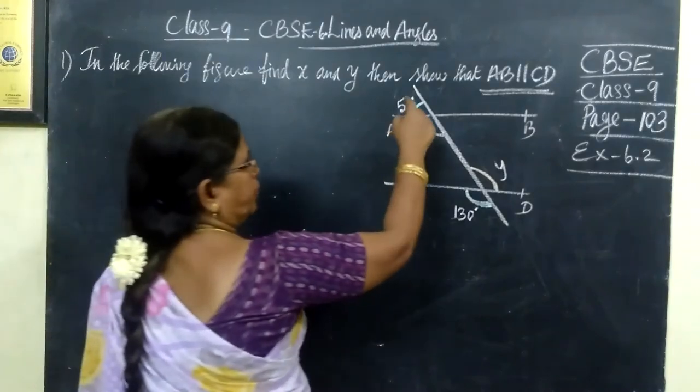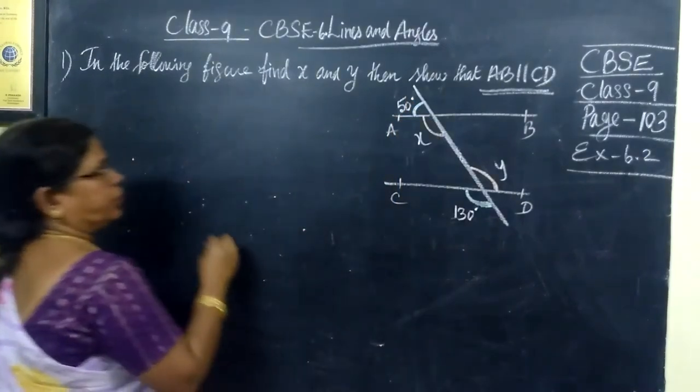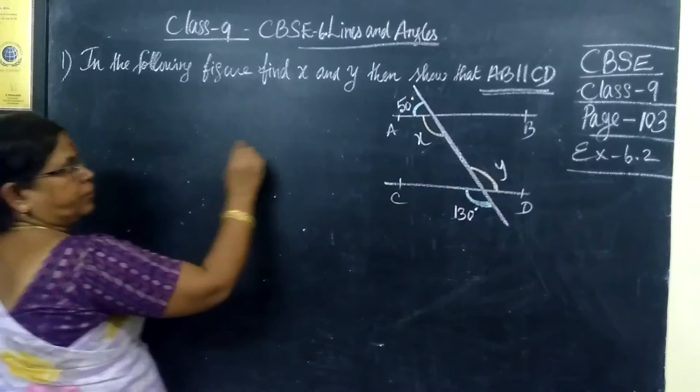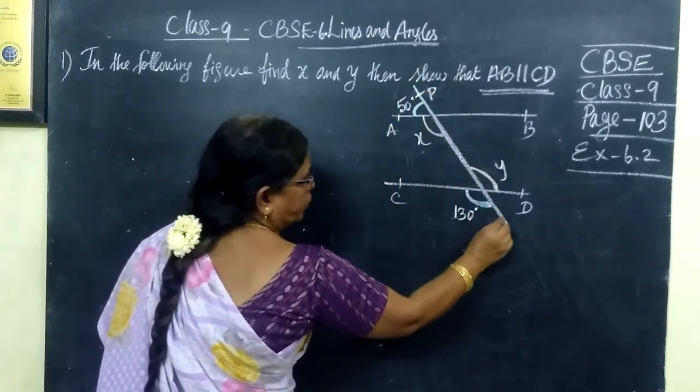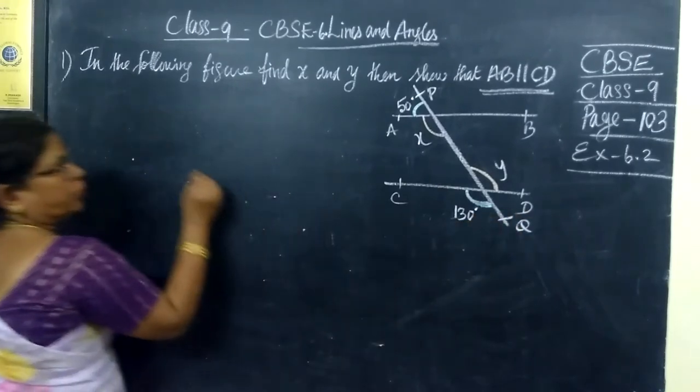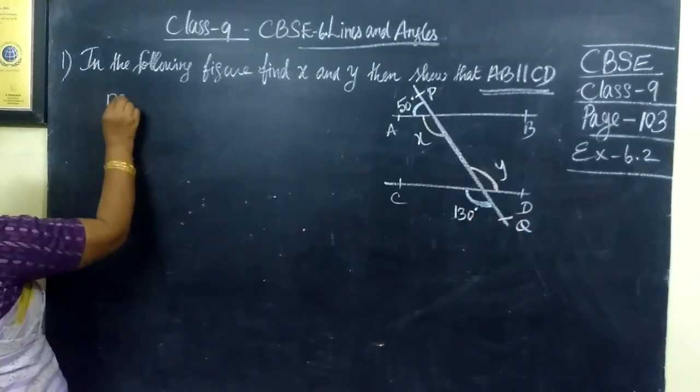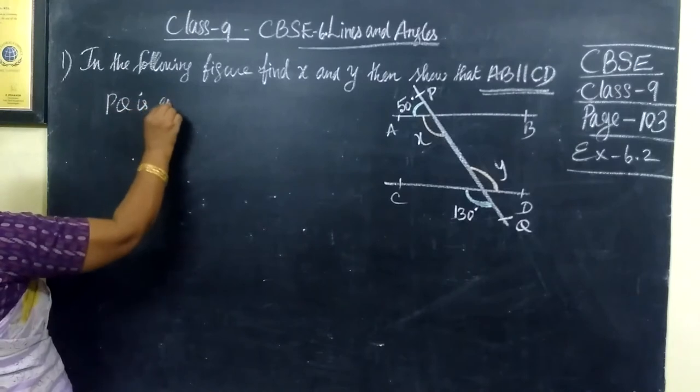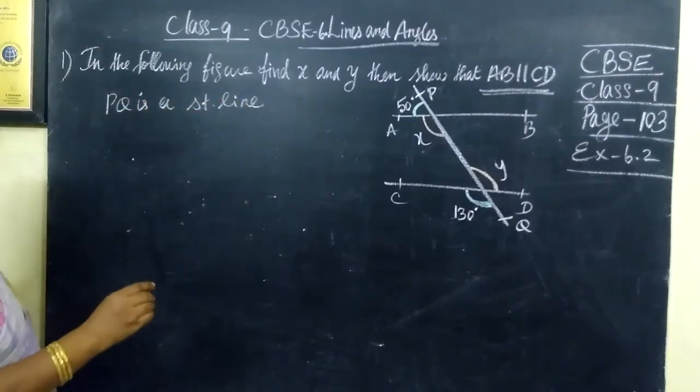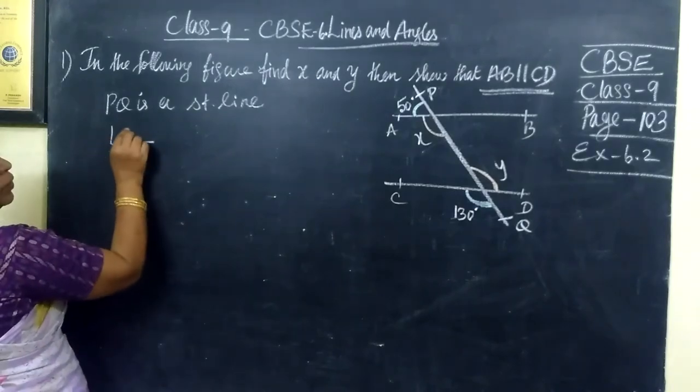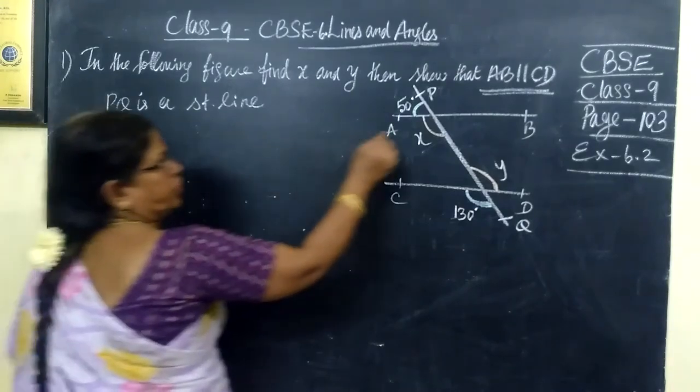Here it is given 50 degree. So consider this, we give the name as P then Q. PQ is a straight line. So we come to know that angles, which one? Give some name.